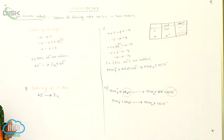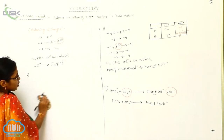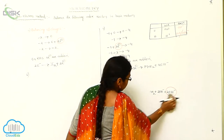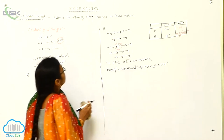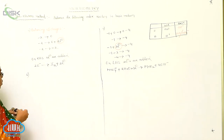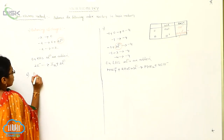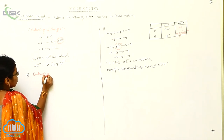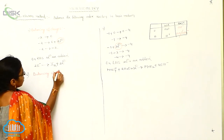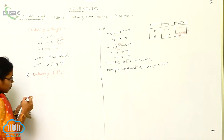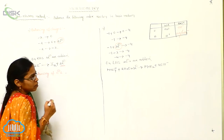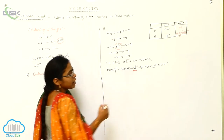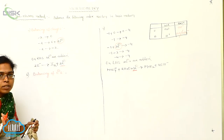Now our sixth step: balancing of electrons. For the balancing of electrons — in the oxidation half-reaction, how many electrons are added? Two electrons. In the reduction half-reaction, how many electrons are added? Three electrons.